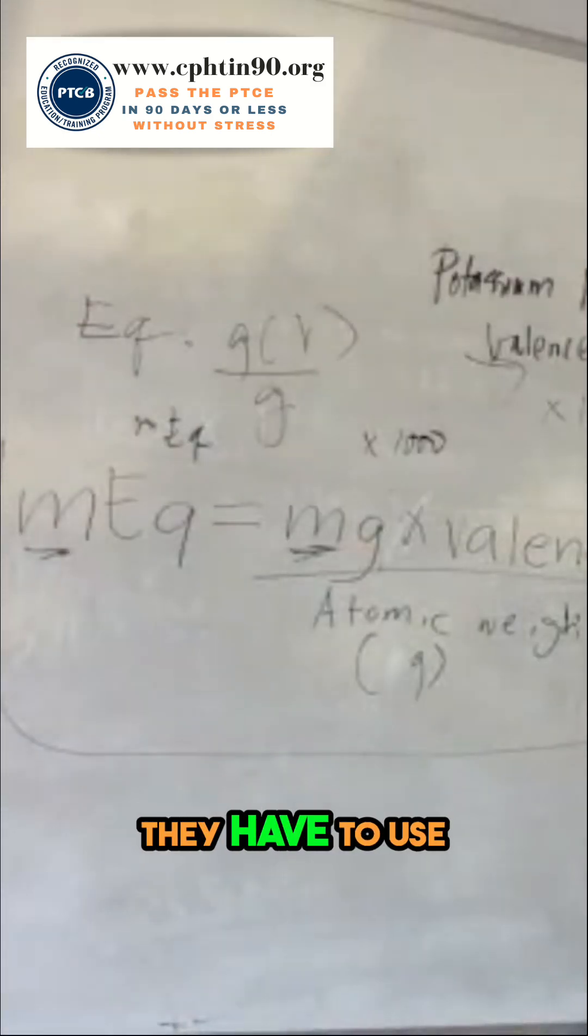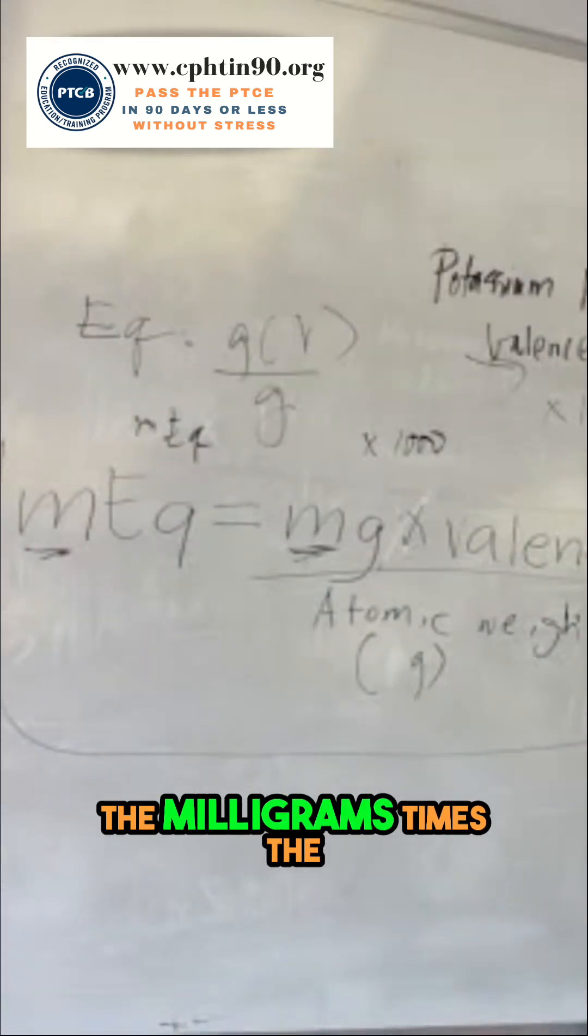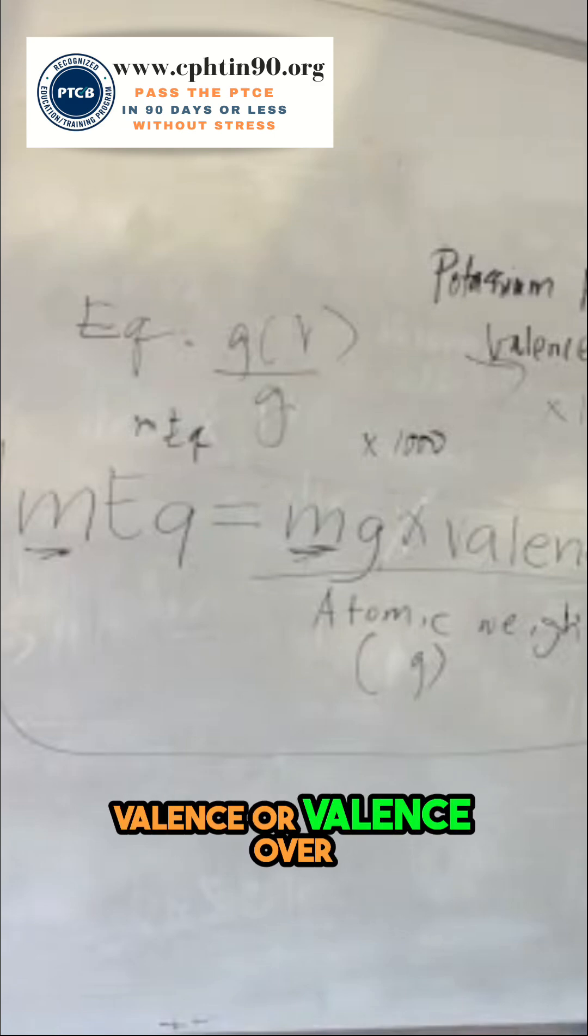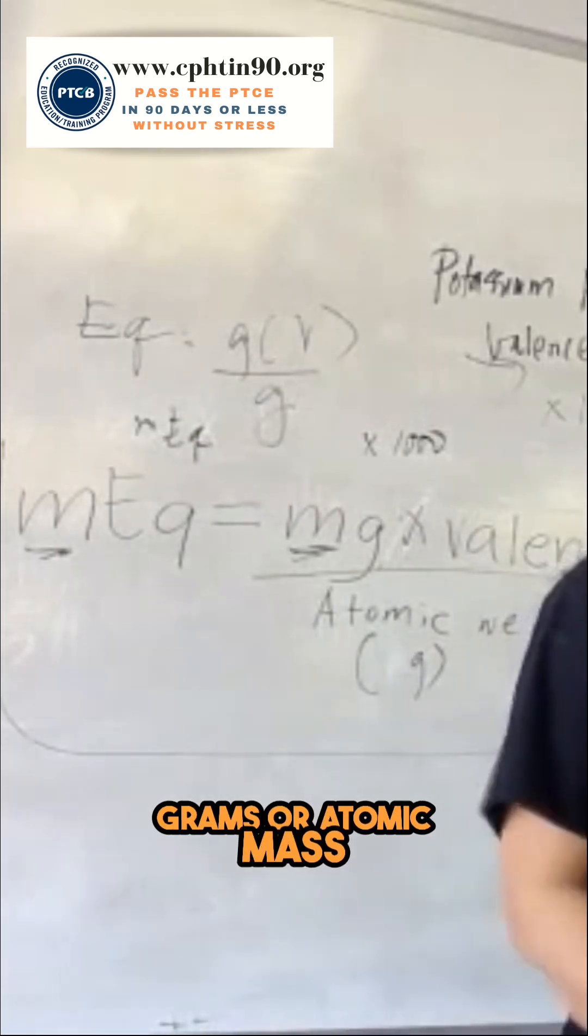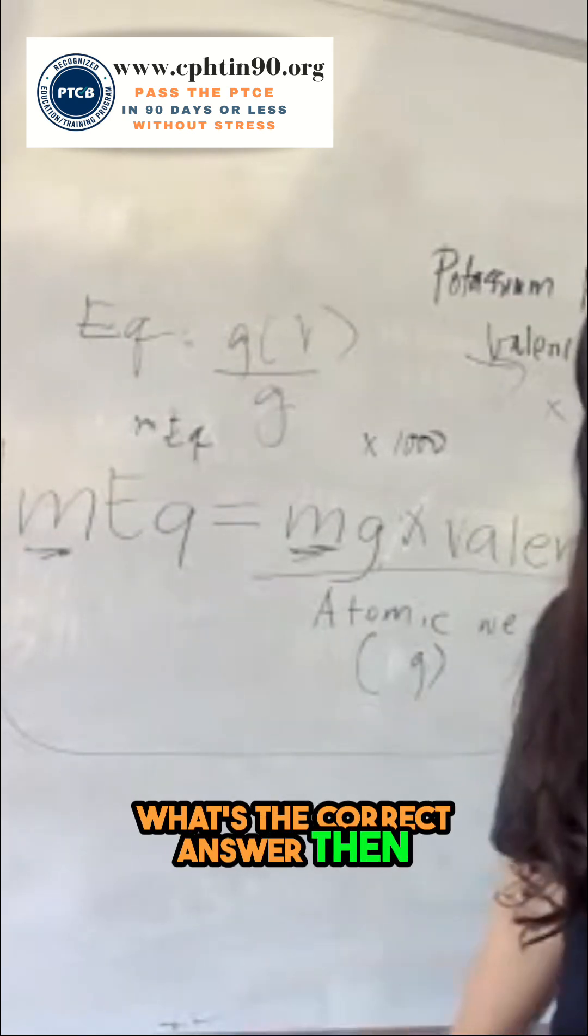The milliequivalent, they have to use the milligrams times the valence, or valence over the atomic weight in grams or atomic mass. Did you see? Yes, what's the correct answer then?